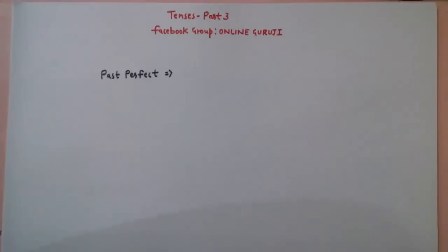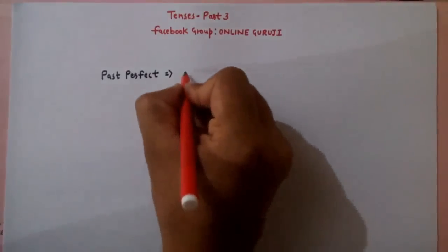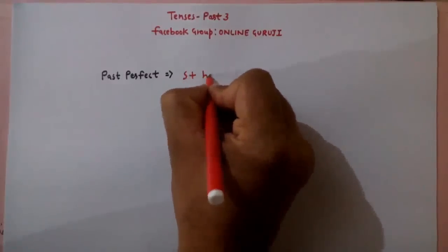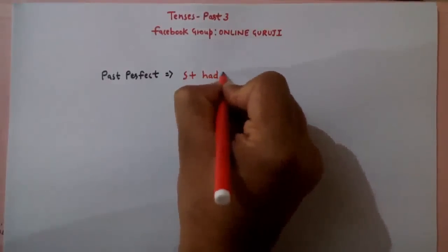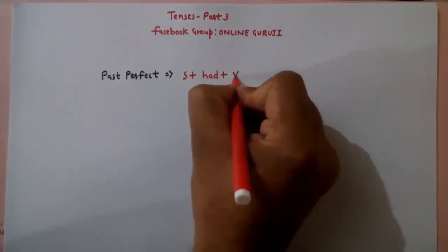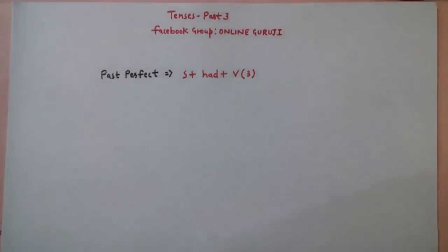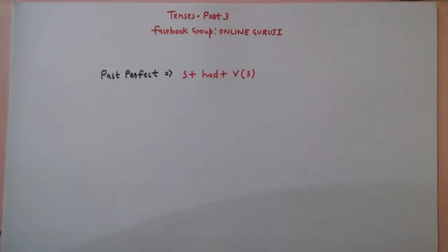Had में. तो helping verb क्या होगा — यहाँ पर had होगा. Subject plus helping verb had. अब जो main verb आएगा, वो third form पे होगा. क्यों? क्योंकि has, have, had के साथ verb हमेशा अपने third form पे ही रहता है. तो यह आप लोगों का basic structure है Past Perfect Tense का — Subject + Had + Verb (3rd form).